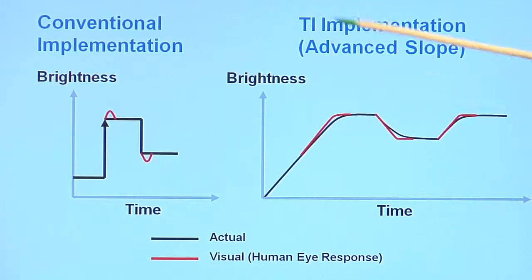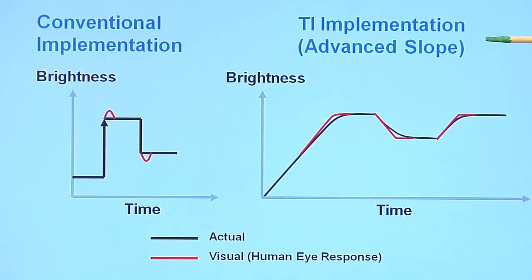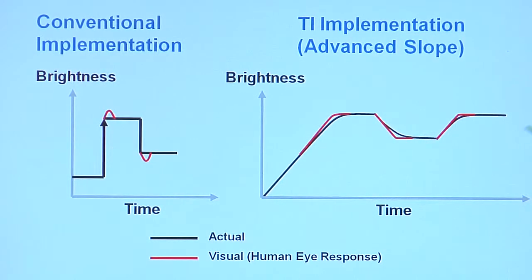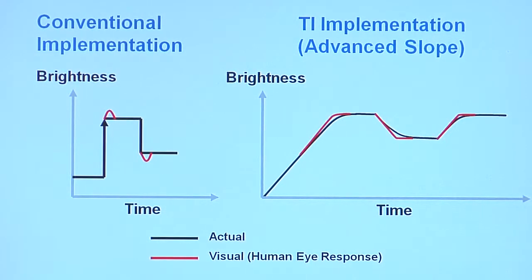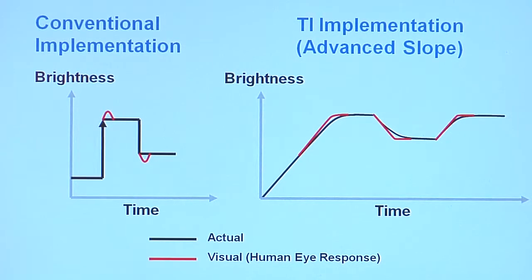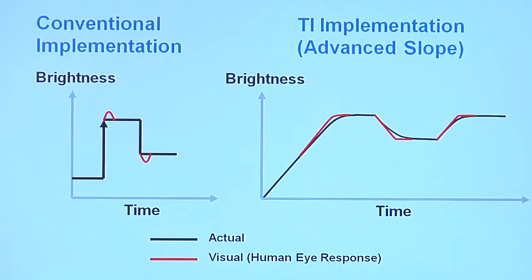To overcome this, we have a feature called Advanced Slope whereby we don't implement the step function but implement a slope function which, number one, gives a smooth brightness response when the user changes the brightness as well as we modulate the PWM so that the human eye, the glitch perceived by human eye is eliminated.